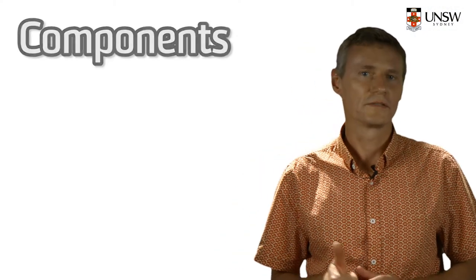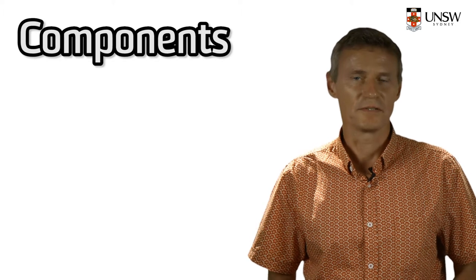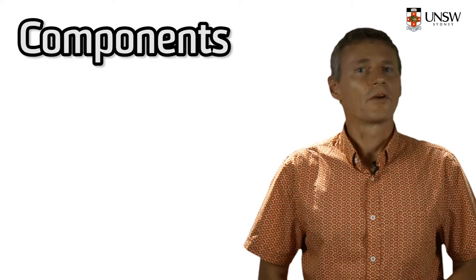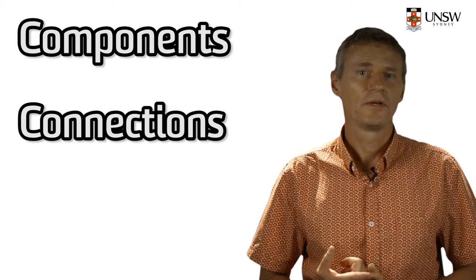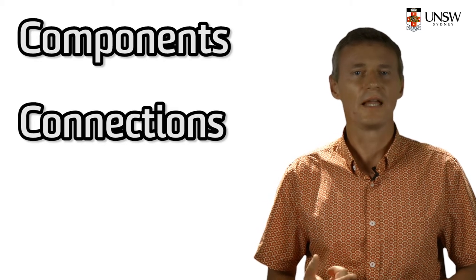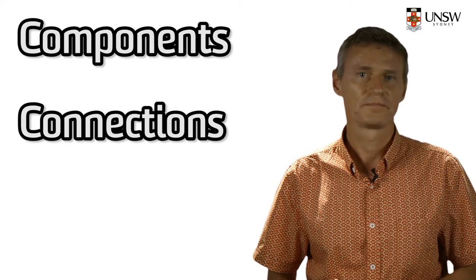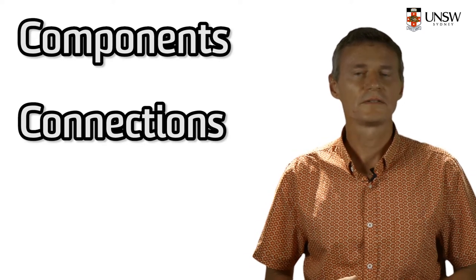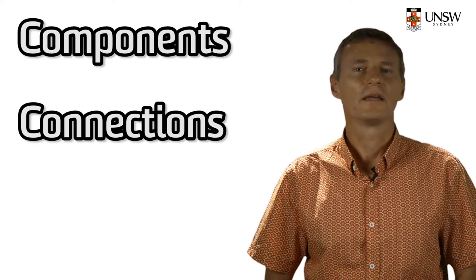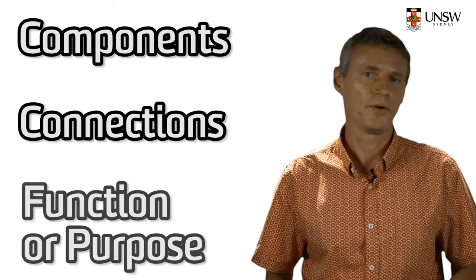Three things are needed to make up a system. The first thing are the components of the system — the parts that make up the system. The components need to be connected somehow, which means they need to be interrelated or even interacting with each other. And finally, the interacting components need to work together in an organized manner to fulfill a specific function or purpose.